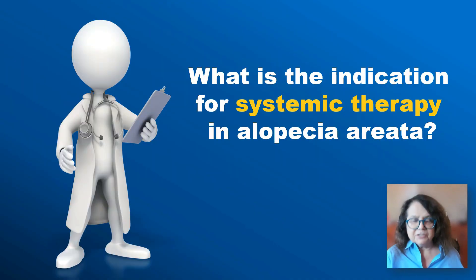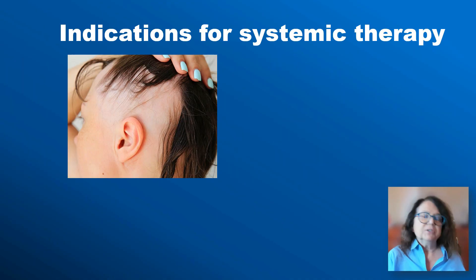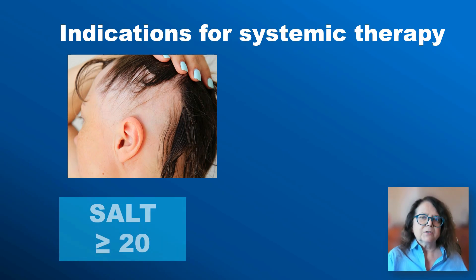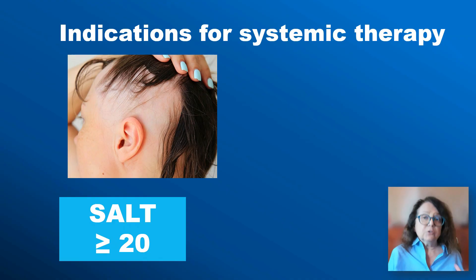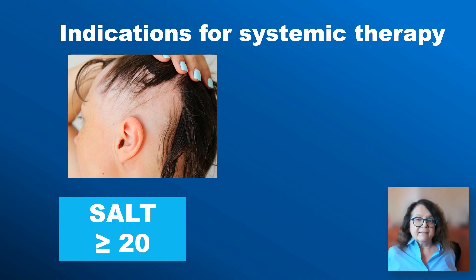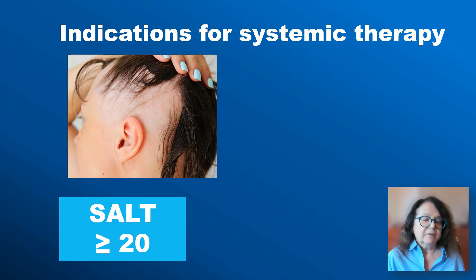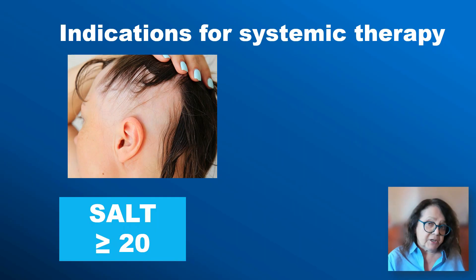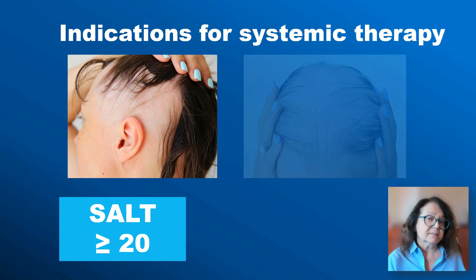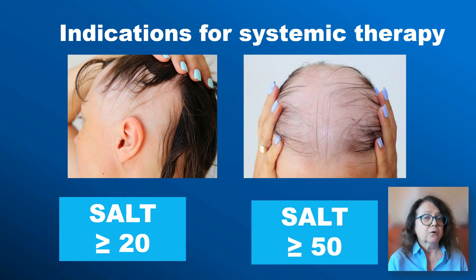What is the indication for systemic therapy? According to the European Consensus for Treatment of Alopecia Areata, a SALT score of 20 is an indication to start systemic therapy, including the possibility of starting JAK inhibitors. However, the registration for JAK inhibitors is for severe alopecia areata, meaning a SALT score of 50 or more.